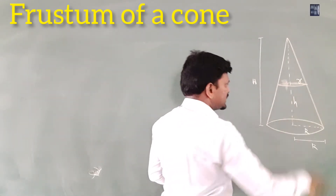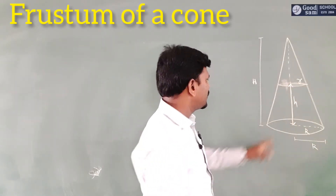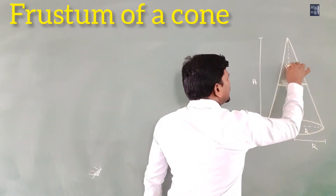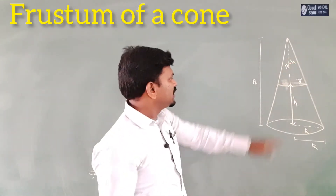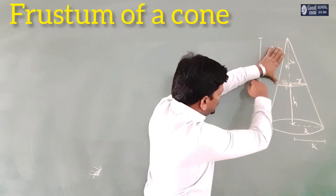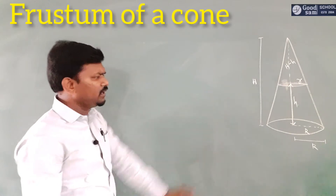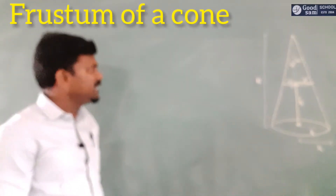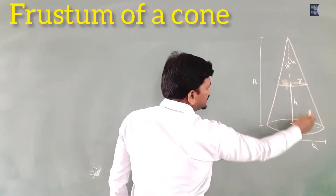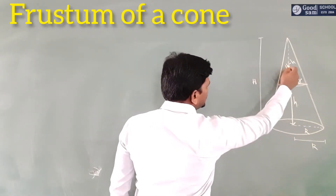We can take the height of the frustum of a cone as small h. So the height of the smaller cone must be H minus h, because the entire height is capital H, and H minus h is total length minus this length. So we have: capital R, capital H, small r, small h, capital H, and H minus h — everything is defined.